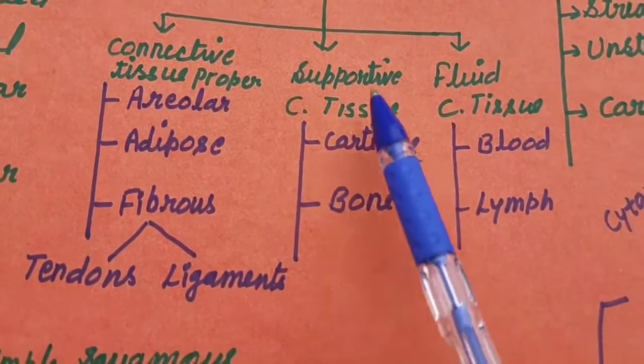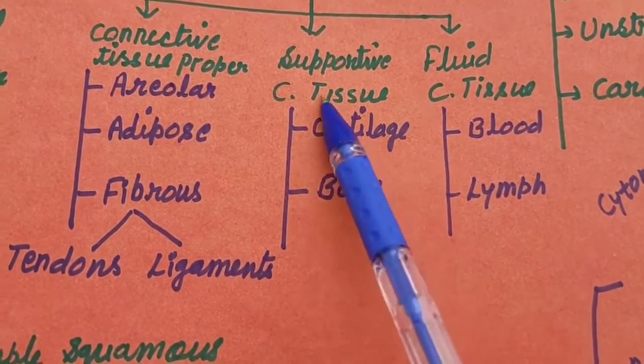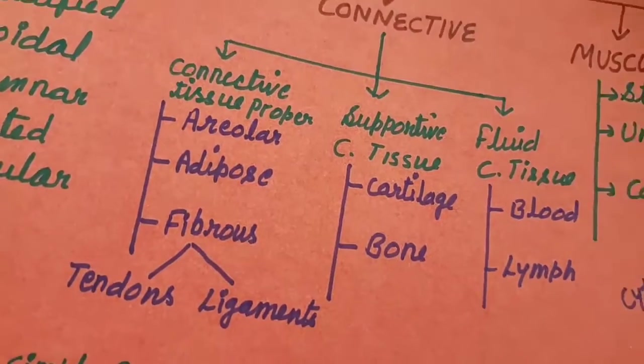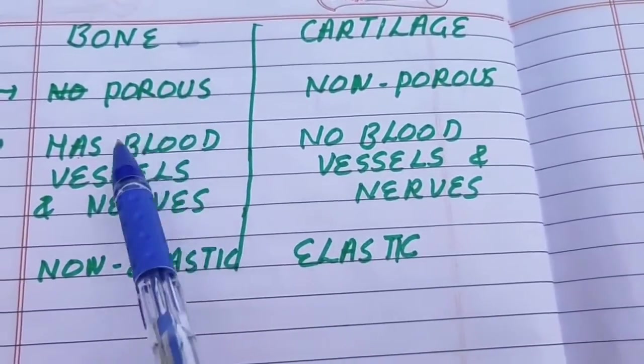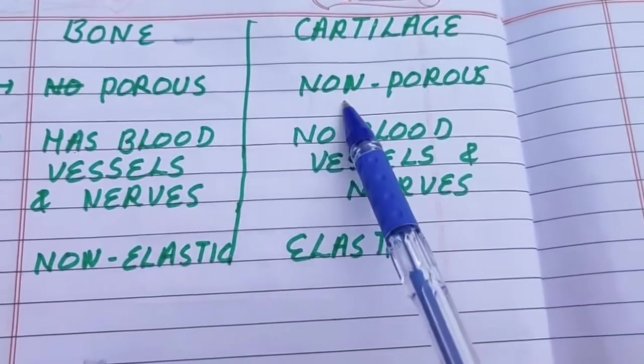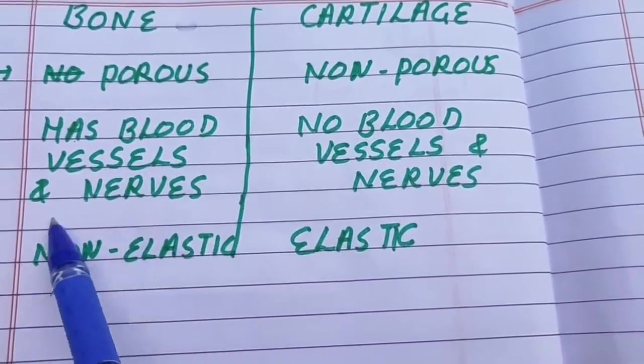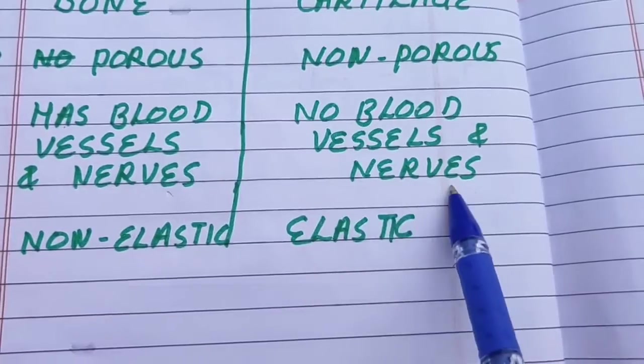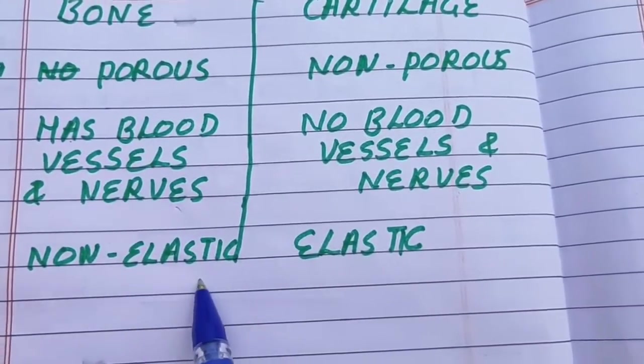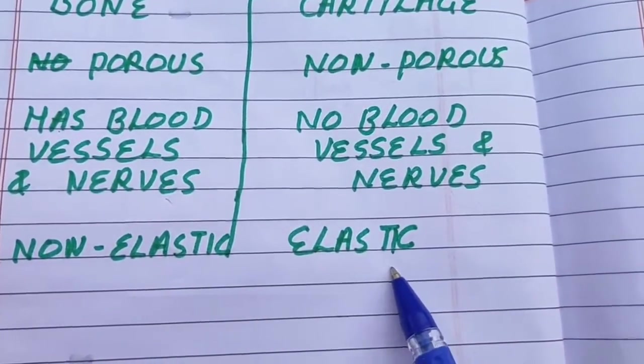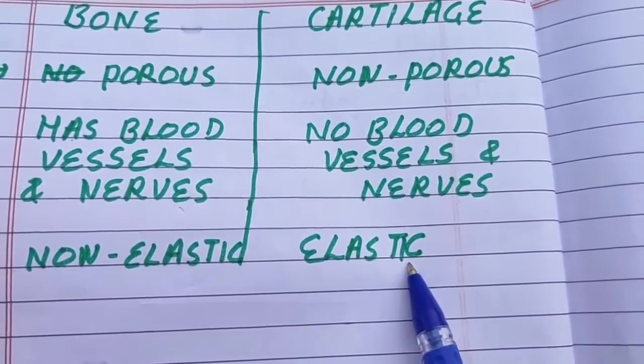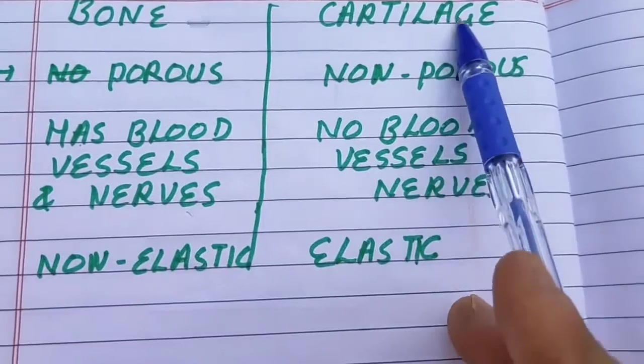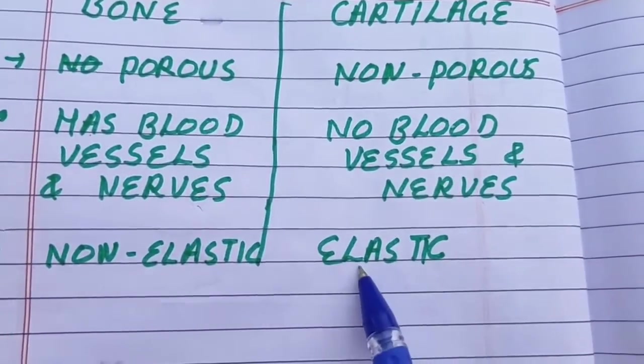Next, supportive connective tissue is of two types: cartilage and bone. What is the difference between cartilage and bone? Bone is porous, cartilage is non-porous. Bone has blood vessels and nerves, good supply of blood vessels. While cartilage, no blood vessels and nerves. Bone is non-elastic and cartilage is elastic. Cartilage is found in nose, nose tips and ear pinna. That's why we can pull the ear because of elasticity in nature. It is made up of cartilage.